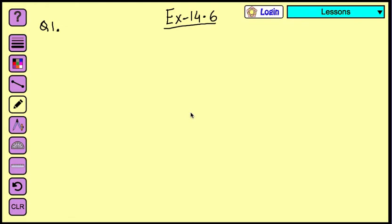We are going to do question number one of exercise 14.6, practical geometry. The question says draw angle POQ of measurement 75 degrees and find its line of symmetry.